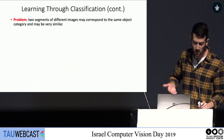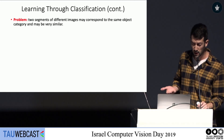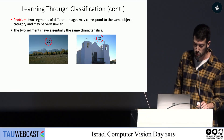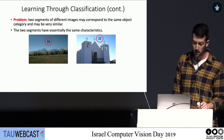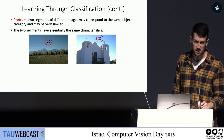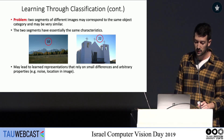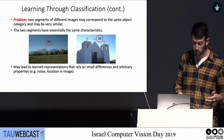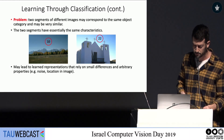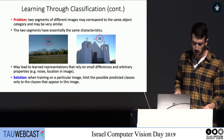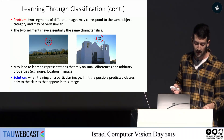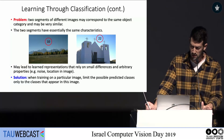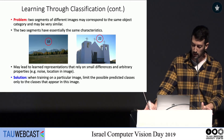But now the opposite problem occurs: what if two segments in different images are essentially the same — like the sky in two images — and we try to teach a classification network to separate them? This would lead to a network that learns representations relying on small, arbitrary differences like noise or image location, which is very unwanted. Our solution: when training on a particular image, we limit the possible predicted classes only to the classes that appear in the current image, so gradients propagate only from labels present in that image.